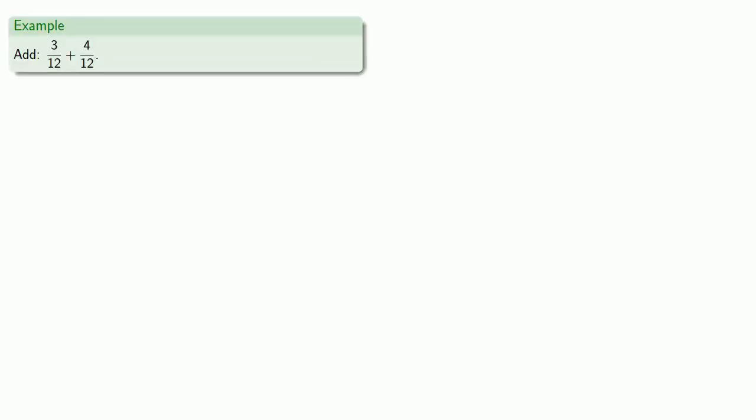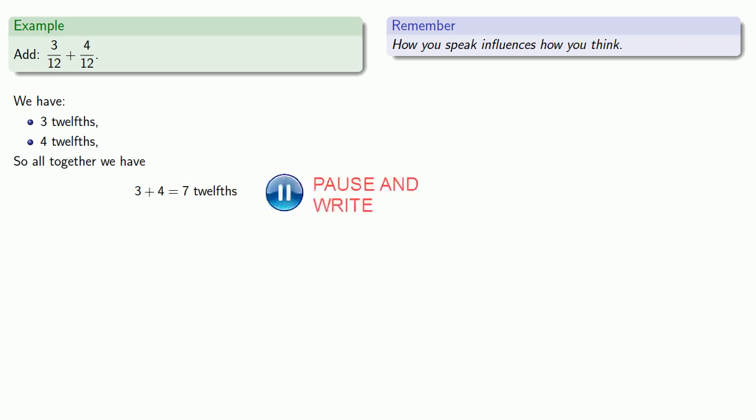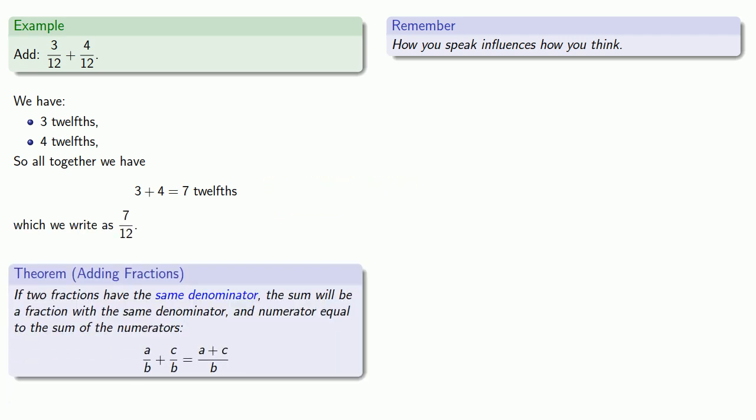So let's consider this addition of two fractions, and remember, how you speak influences how you think. This is not 3 over 12 plus 4 over 12. It's 3 twelfths and 4 twelfths. Since we're adding, we're going to put them together. So all together, we have 3 plus 4, 7 twelfths, which we write as a fraction. And this leads to an important result. If two fractions have the same denominator, the sum will be a fraction with the same denominator, and a numerator equal to the sum of the numerators.